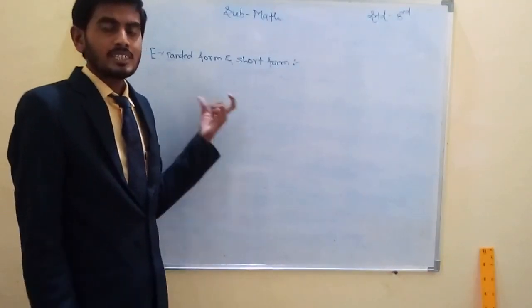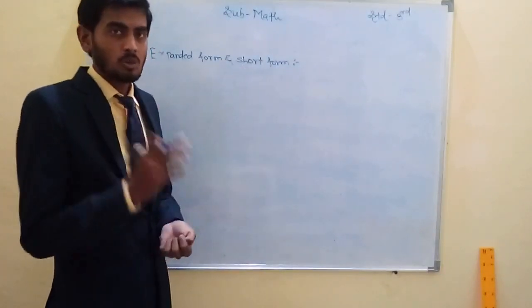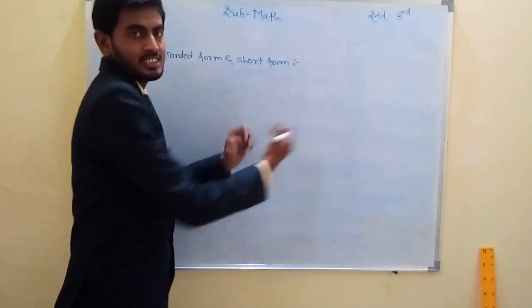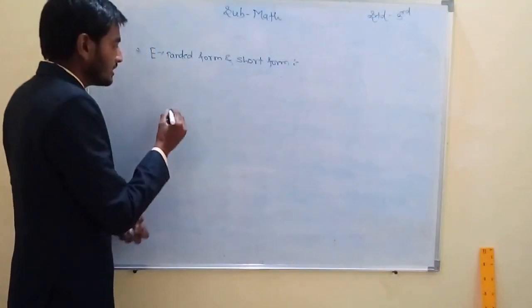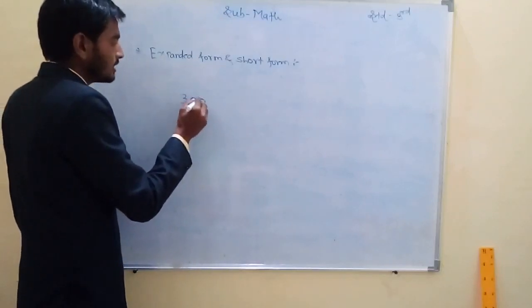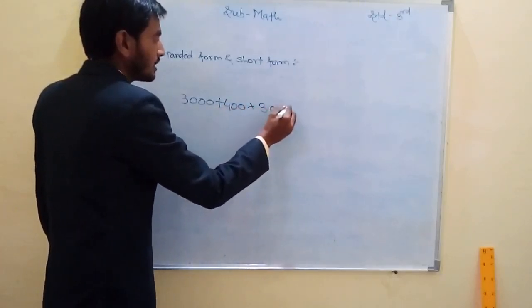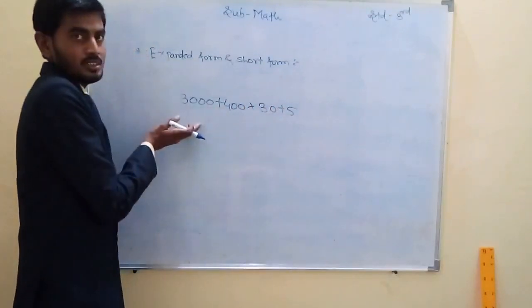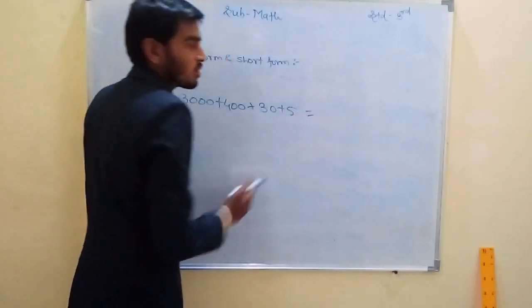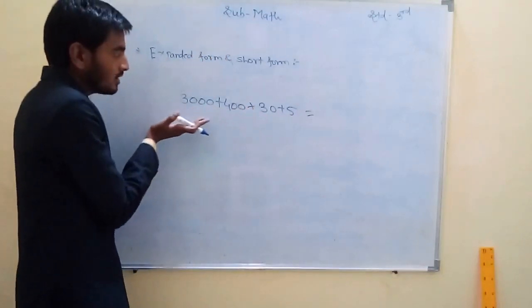Okay students, we discussed expanded form. Now we will discuss short form. What is short form? Short form means write all the expanded form in one form, in addition form. How is it calculated? Let us see. First, write the expanded form of any number. Suppose 3,000 + 400 + 30 + 5. Is this our expanded form? Write this in short form — add all these numbers.